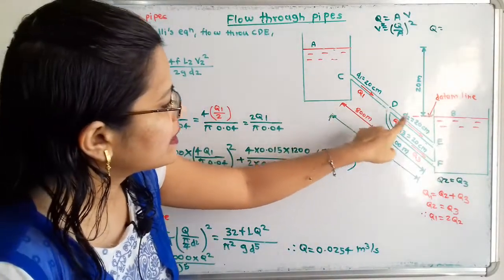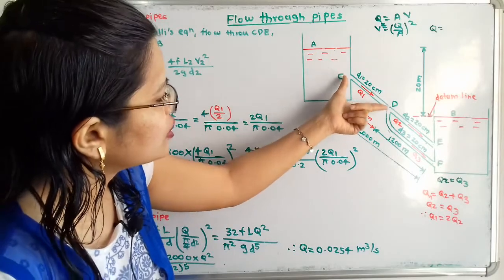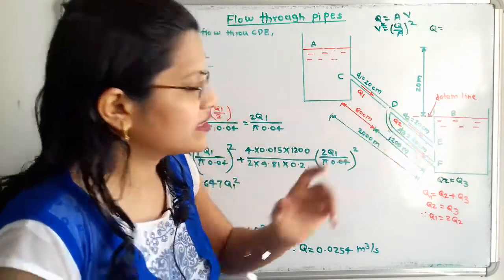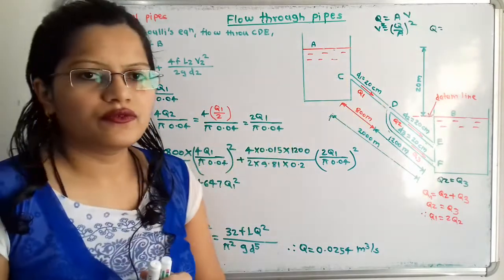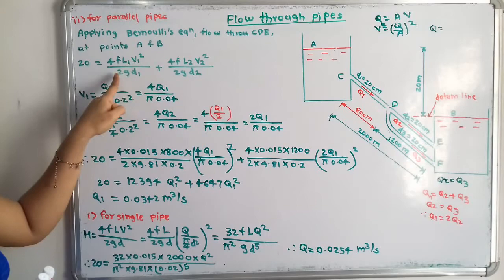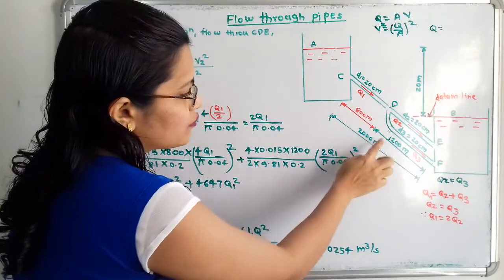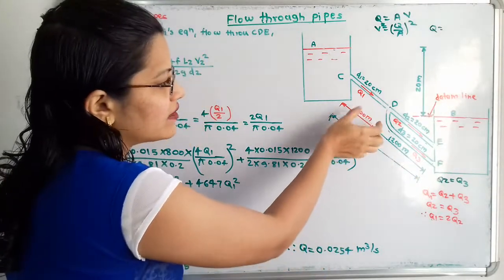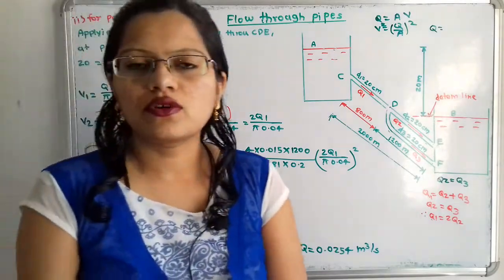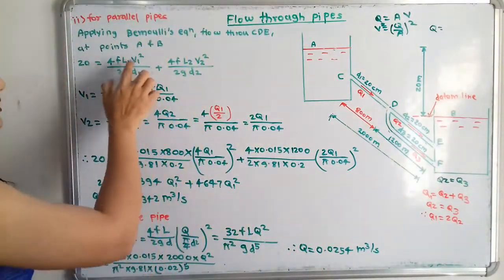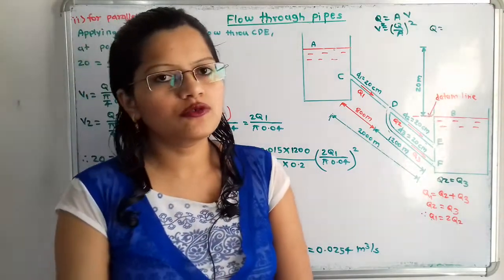For pipe path CDE, the discharge is Q1 for section CD and Q2 for section DE. We consider only major (friction) losses. For section CD: loss = 4F × L1 × V1² / (2G × D1), where L1 = 2000 − 1200 = 800 m, D1 = 0.2 m, and V1 is unknown. We keep V1 as is for now.